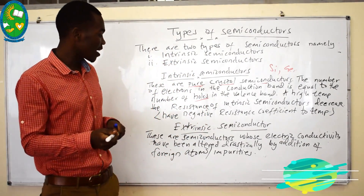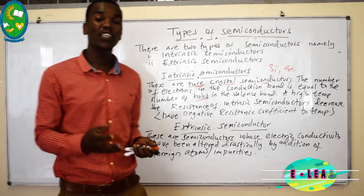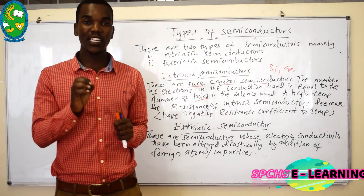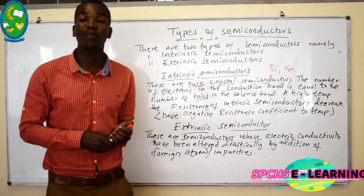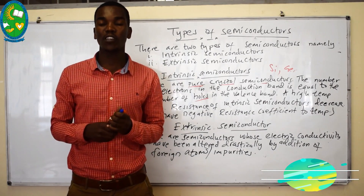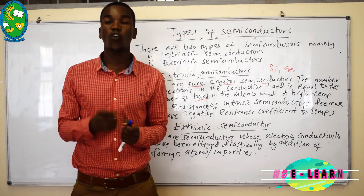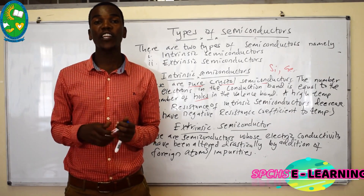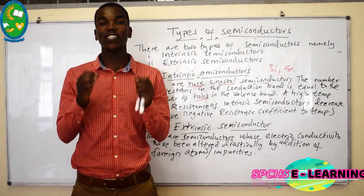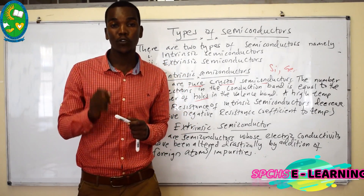The second type of semiconductor is known as extrinsic semiconductors. This is a crystal semiconductor in which its structure is drastically altered by additional foreign atoms. These foreign atoms are what we call impurities. Therefore, an extrinsic semiconductor is a type of semiconductor which consists of impurities.